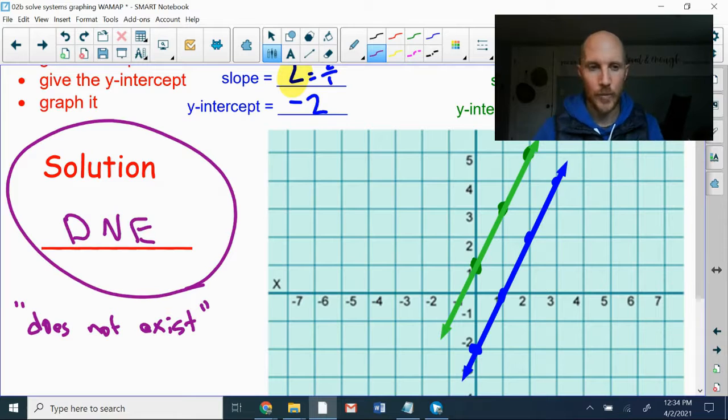And so we're going to write for the solution is just an abbreviation or an acronym for does not exist. D N E. And that is what we'll have to put into WMAP. You can use capital or lowercase letters. That doesn't matter. WMAP, you're going to have to use D N E to indicate the lines are parallel. They never cross. There is not a solution.